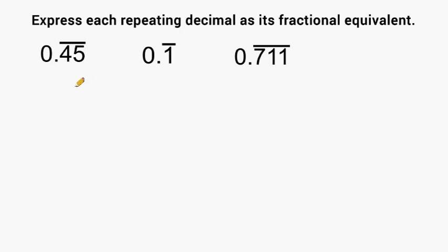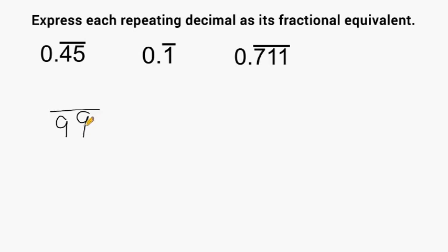Now if you see examples like that, here's what you do. You count how many digits you have repeating underneath this line — and we have two of them. What you're going to do is write a fraction bar, and because we have two numbers repeating underneath this line, we will write that many nines for our denominator. So we're going to write a 99.